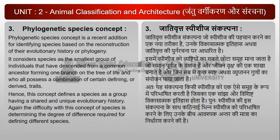3. जातिवृत्त Species संकल्पना: जातिवृत्त Species संकल्पना, जो species की पहचान करने का एक नया तरीका है, उनके विकासात्मक इतिहास अथवा जातिवृत्त की पुनर्रचना पर आधारित है। इसमें स्पीशीज को व्यष्टियों का सबसे छोटा समूह माना जाता है जो समान पूर्वज के वंशज हैं और जीवन वृक्ष की एक शाखा बनाते हैं, और जिन सब में कुछ स्पष्ट अथवा व्युत्पन्न गुणों का संयोजन पाया जाता है। अतः यह संकल्पना किसी स्पीशीज को एक ऐसे समूह के रूप में परिभाषित करती है जिसका एक साझा और विशिष्ट विकासात्मक इतिहास होता है। पुनः स्पीशीज की इस संकल्पना के साथ कठिनाई भिन्न स्पीशीज को परिभाषित करने के लिए उनके बीच आवश्यक अंतर की मात्रा का निर्धारण करने की है।